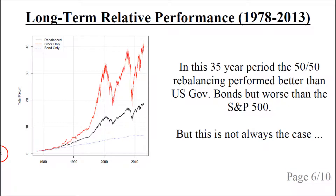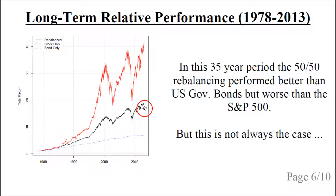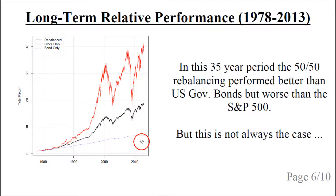Let's look at the long-term relative performance. The red line shows the S&P 500 with dividends reinvested — also called the total return. The black line shows the 50-50 rebalancing scheme, and the blue line shows an investment in US government bonds. We can clearly see that the rebalancing was somewhere in the middle between US government bonds and the S&P 500, but the question is: is this always the case?